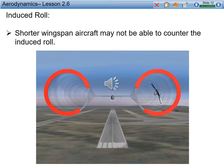Don't think wingtip vortices or wake turbulence is going to affect you in a T-6? Think again. Induced roll — shorter wingspan aircraft may not be able to counter the induced roll caused by larger aircraft vortices. The most hazardous area is right in between that aircraft and between those two wingtip vortices, more or less doubling the downwash.